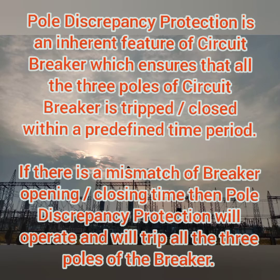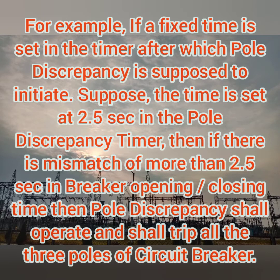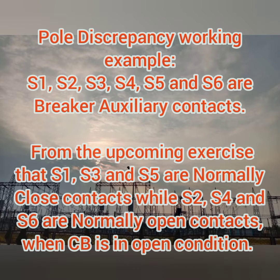Pole discrepancy is used to check the opening and closing of your circuit breaker. It is assisted by a timer and checked by its breaker auxiliary contacts. For example, if a fixed time is set in your timer — suppose the time is set at 2.5 seconds — then if there is any mismatch, meaning the opening and closing is taking place after 2.5 seconds, the pole discrepancy shall initiate and give the trip command for all three poles of your breaker.